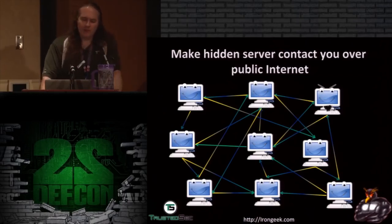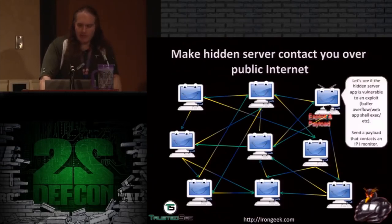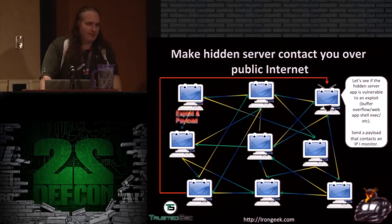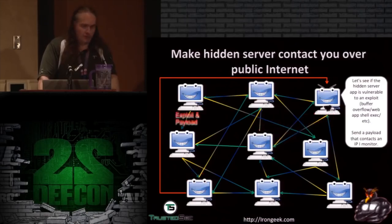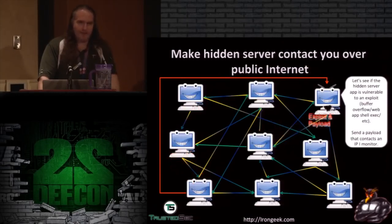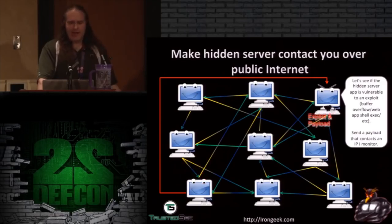Another attack vector: making a hidden server contact you over the public internet. If a hidden service has a command injection vulnerability, even if your connection to it is encrypted through Tor, you can make the server ping you or run a traceroute back to your IP outside the Tor network — depending on firewall rules. This is harder on Tails, which has rules preventing such outbound connections, but a basic Linux box running Tor without proper firewall configuration could be vulnerable.